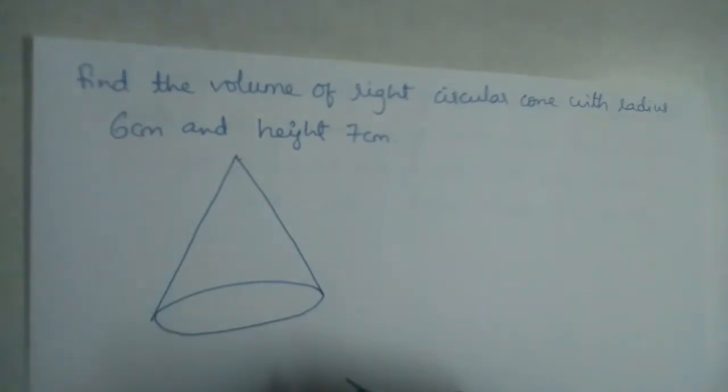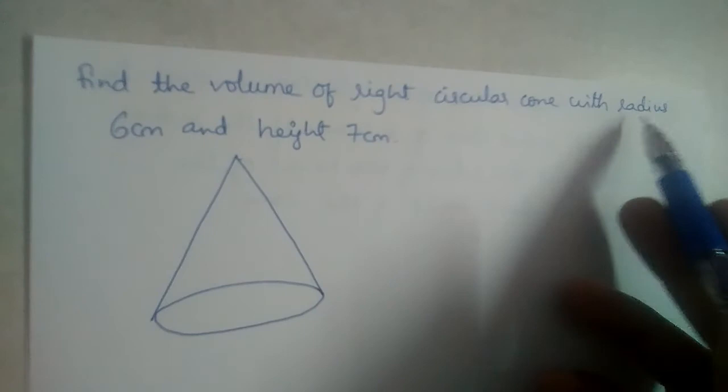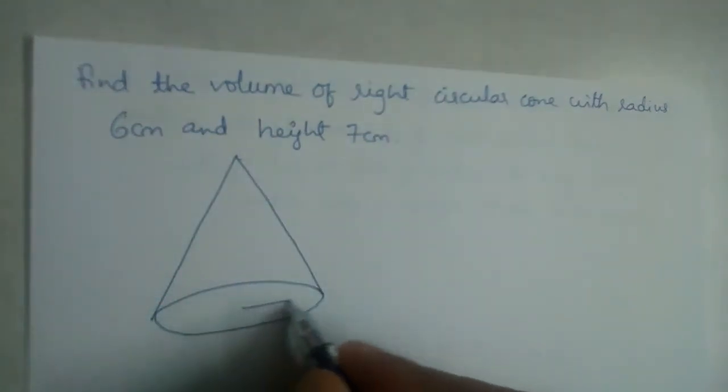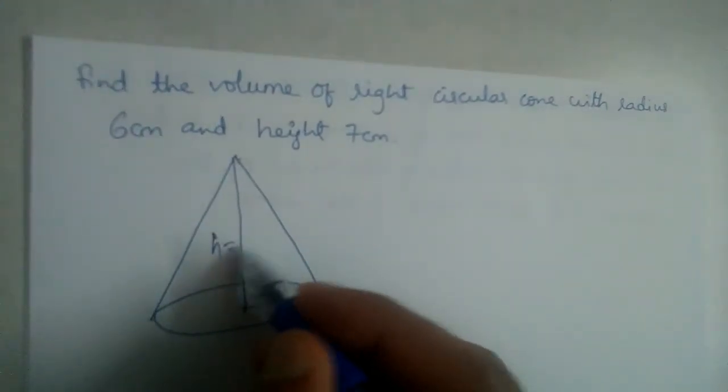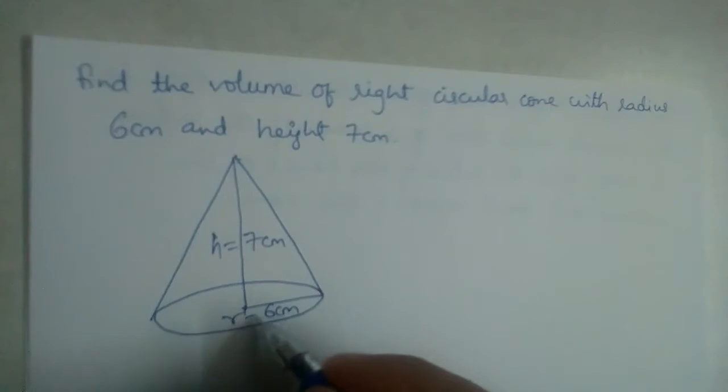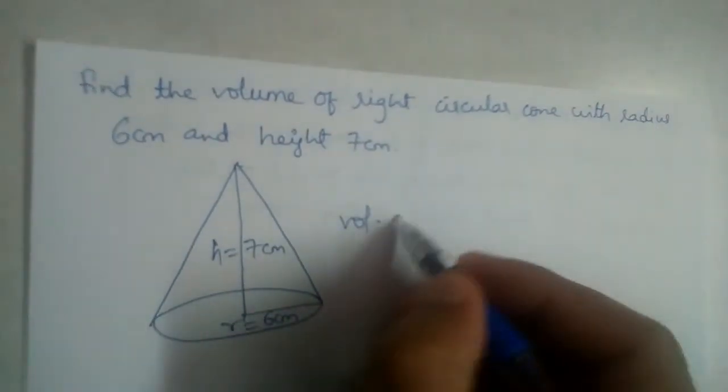This is our cone. We need to find the volume. What are the dimensions given? Radius is 6 centimeters, and the height is 7 centimeters. So h equals 7 centimeters, radius is 6 centimeters. What is the formula to find the volume of a cone?